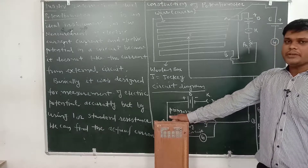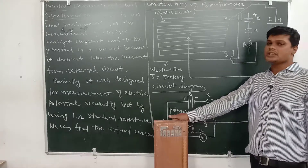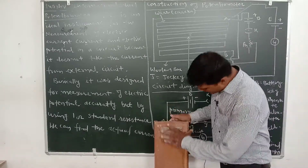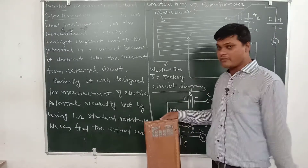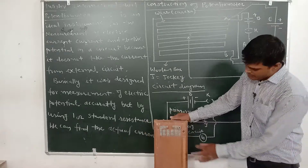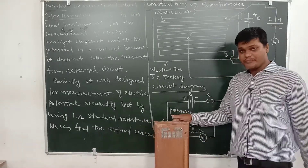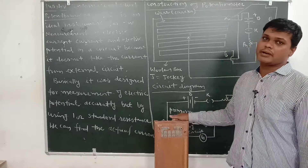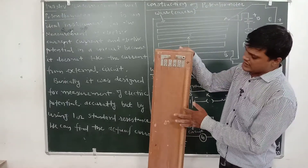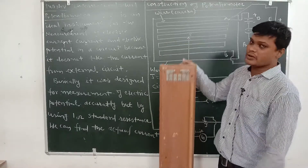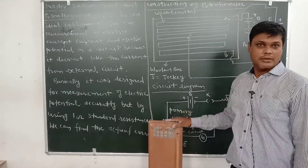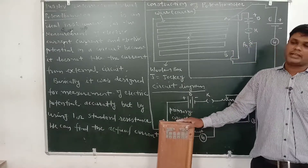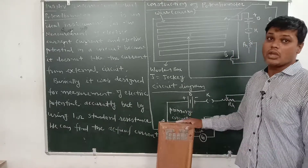Basically, what is the construction and working of the potentiometer? Here, a wooden system arrangement is made. On top of this wooden base, a scale is arranged. On it, we have placed ten wires, each of one meter length. So the total length of wire is ten meters.